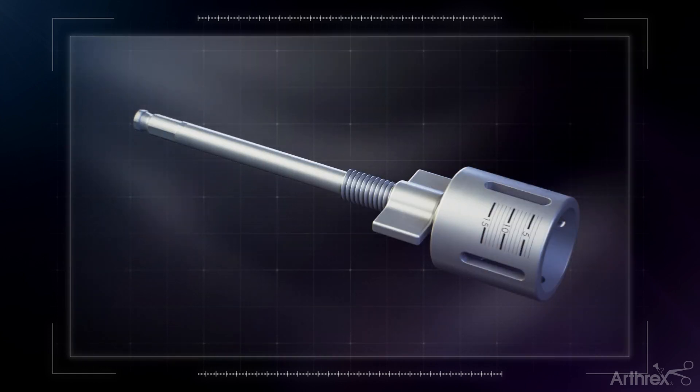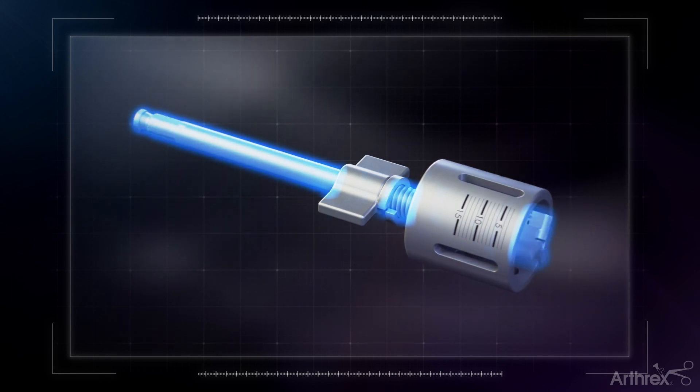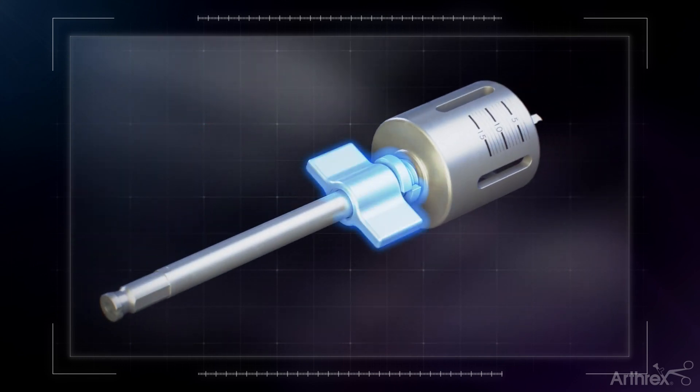Select the appropriate recipient site reamer and loosen the wing nut. Advance the reamer to the desired depth of the recipient site and secure the wing nut.